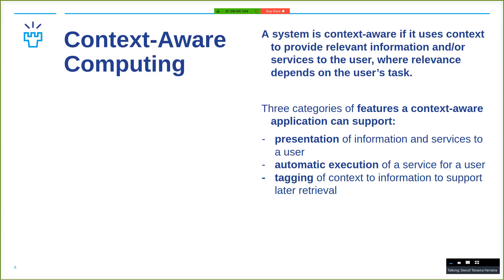If we think about making a context-aware computing system, it's a system that typically uses context, as we defined, to provide relevant information. This is important because it means that the system will work in the most appropriate way for the user when it's actually relevant. Which can also mean that part of the time, a context-aware system is actually not doing anything because it doesn't have a purpose.